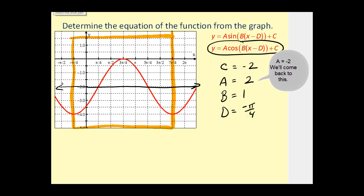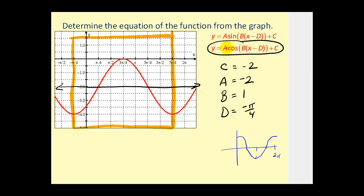There's one other thing. Typically when we graph the cosine function on the interval from zero to two pi, it starts at a maximum, but now we're starting at a minimum. So the cosine function was reflected across the x-axis before it was shifted down two units. The result is a is equal to negative two. So we have y equals negative two cosine of the quantity x plus pi over four, minus two.